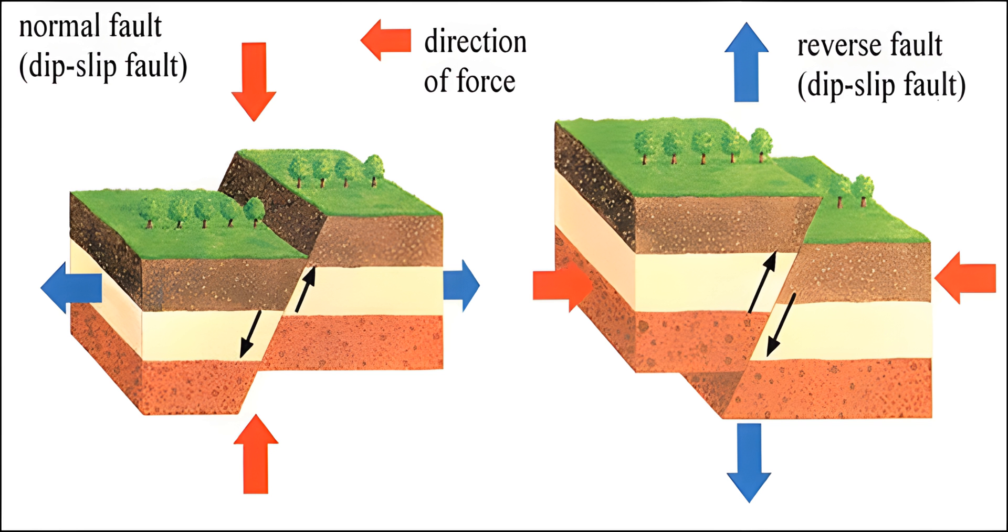Lithospheric flexure is the process by which the lithosphere bends under the action of forces such as the weight of a growing orogeny or changes in ice thickness related to glaciation. The lithosphere rests on the asthenosphere, a viscous layer that in geological timescales behaves like a fluid. Thus, when loaded, the lithosphere progressively reaches an isostatic equilibrium.